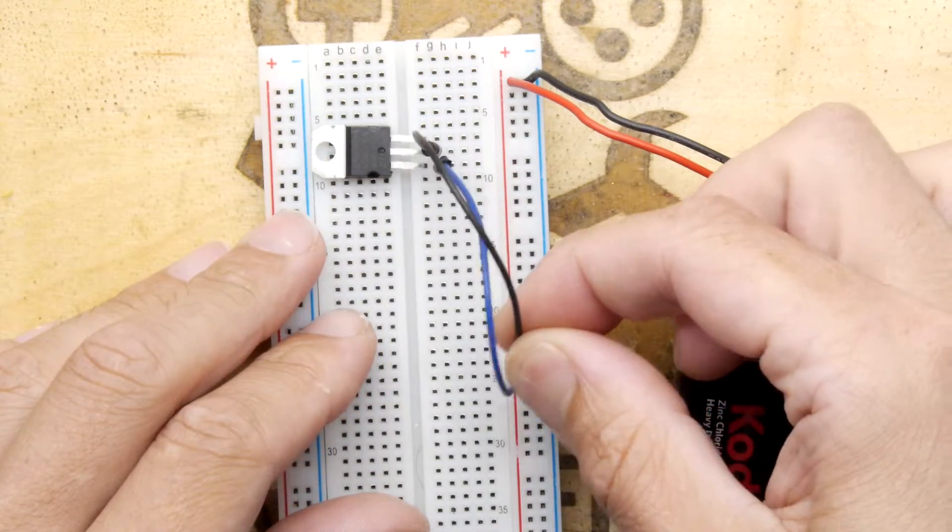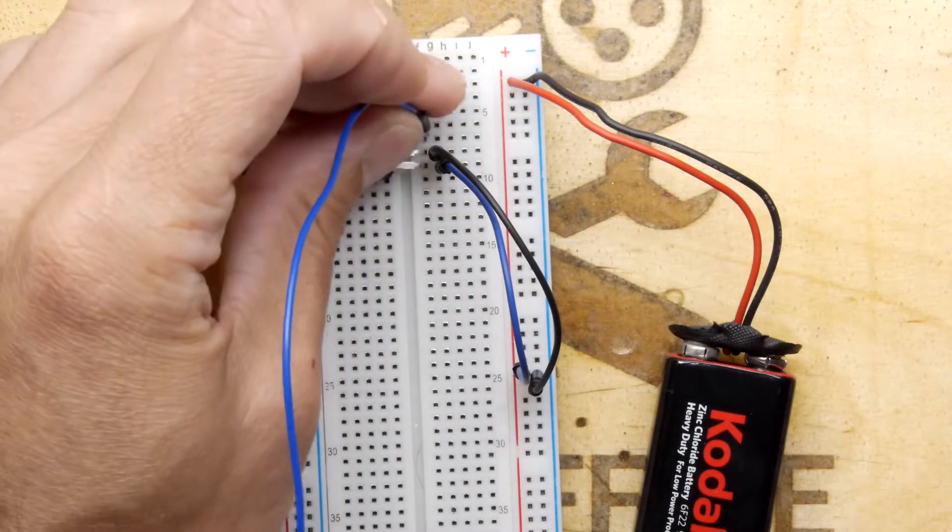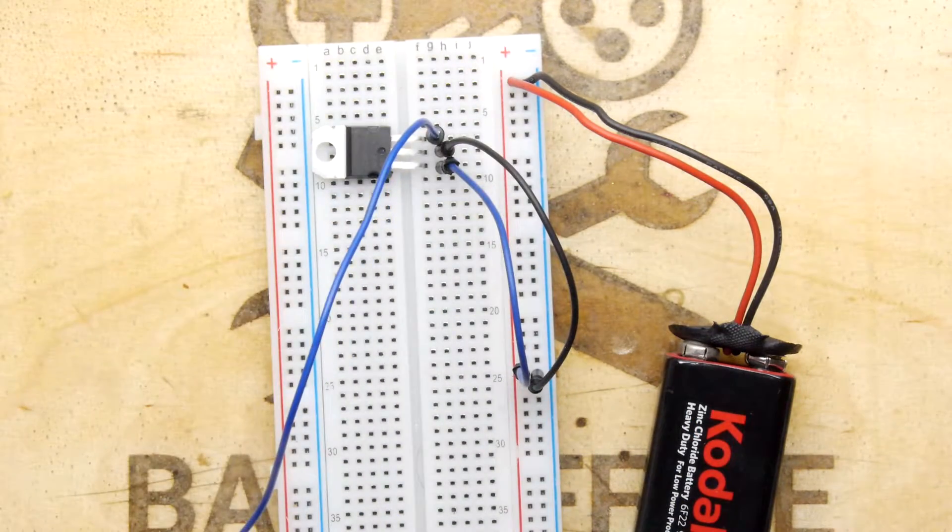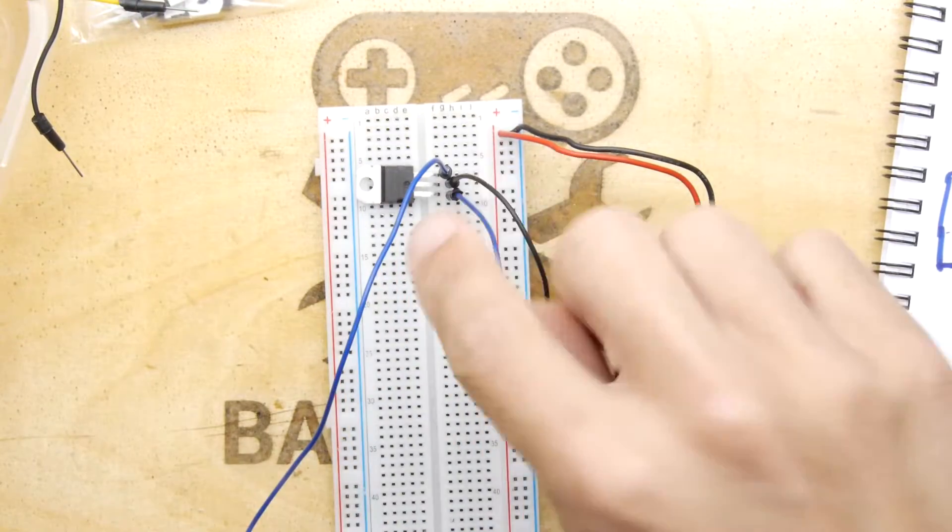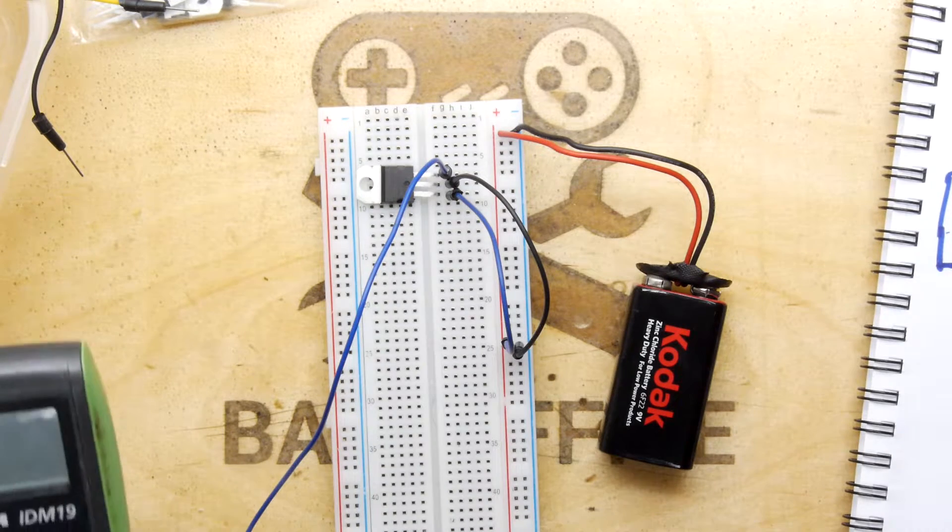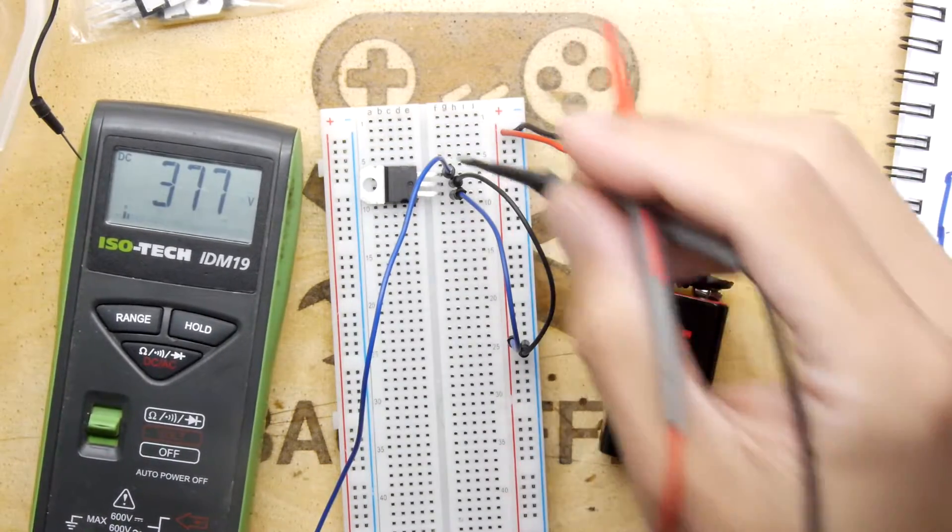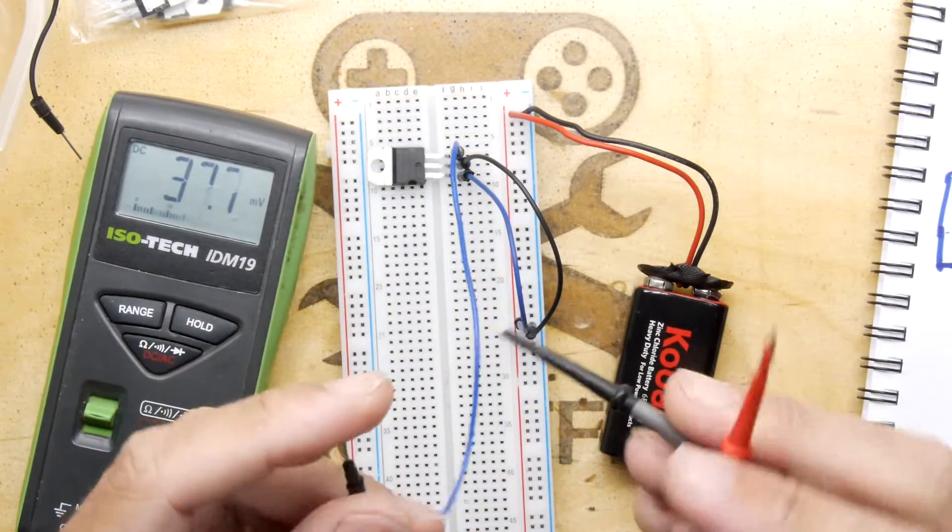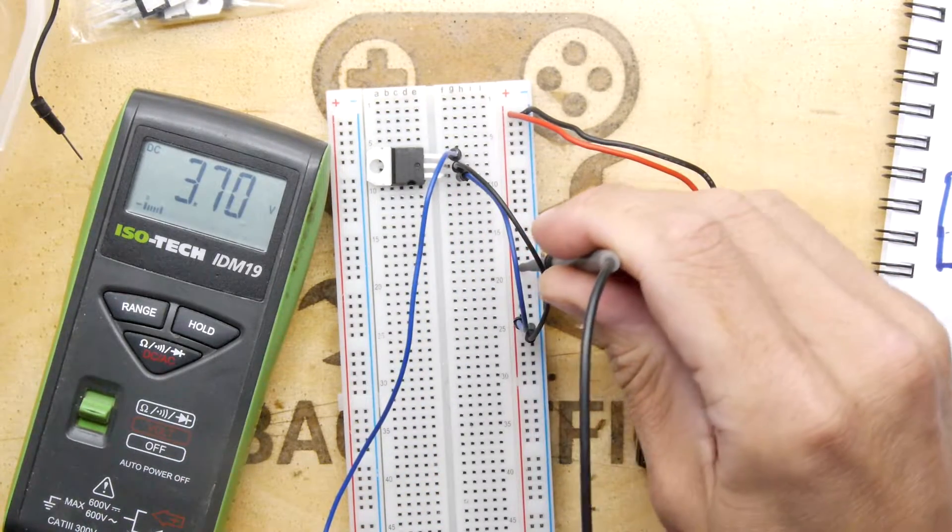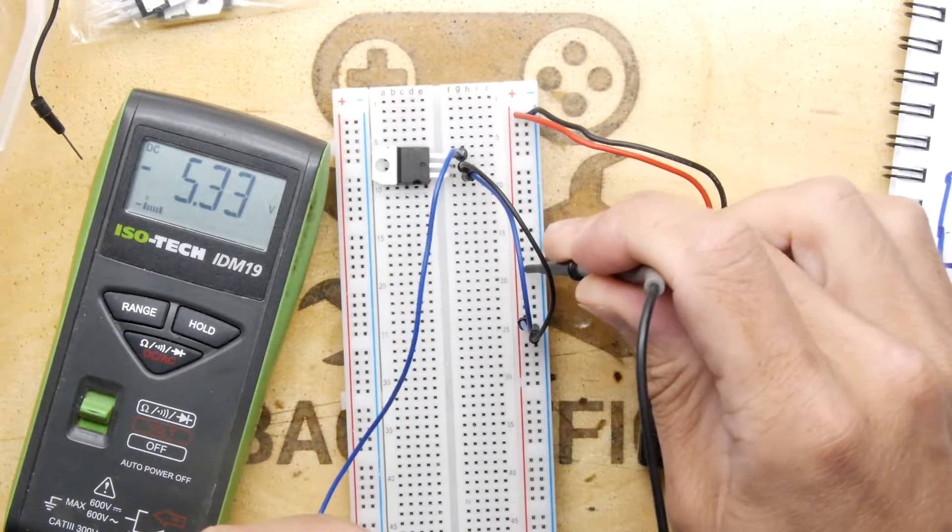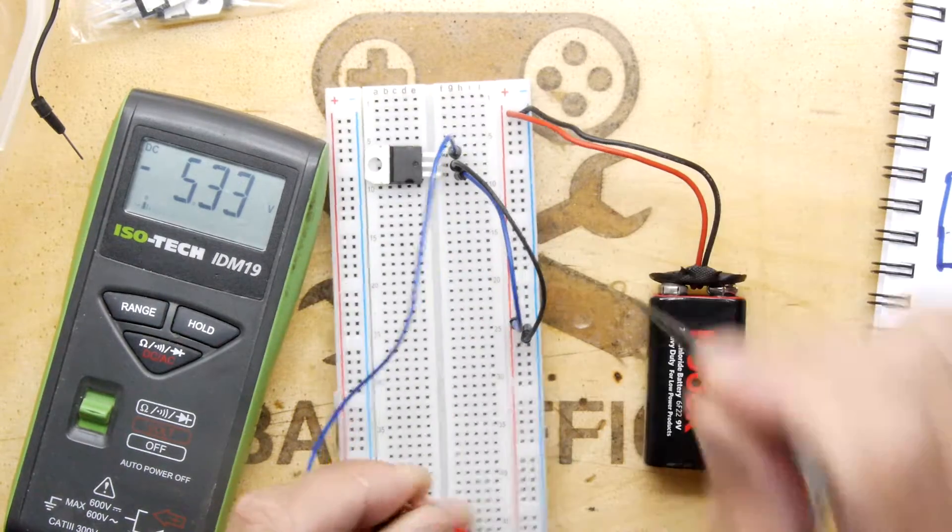And then we have our output pin. So you've got 9 volts coming in, it's being regulated down to minus 5 volts because we've effectively twisted the pins around. For the input you're normally used to using a positive, we're using the negative. I'm going to hook the multimeter up to the output, and then we're going to measure the output to the positive rail.